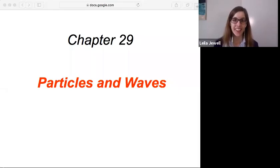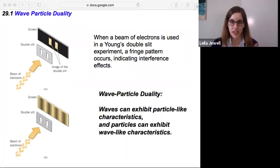Chapter 29, taking a look at how particles and waves can actually be one and the same, kind of strange. This is known as wave-particle duality, as outlined in section 29.1, and it came from the observation that...